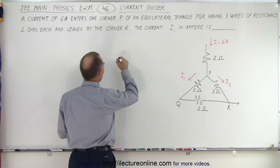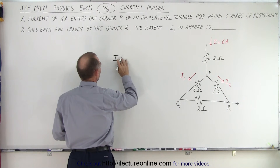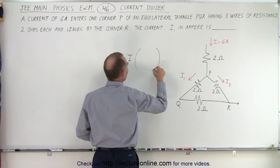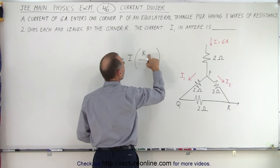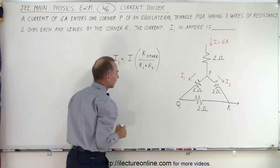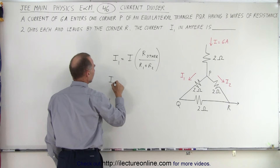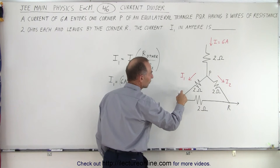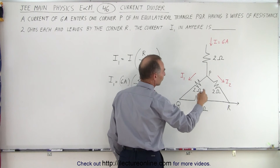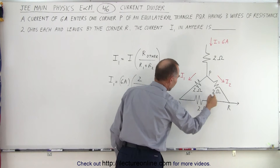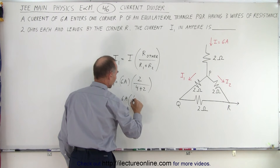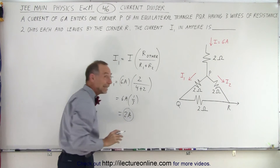It's a simple equation. We can say that I1 is equal to the current entering — let's call that I — times the ratio of the resistance in the other branch, divided by the resistance of both branches together. In this case, I1 is therefore equal to 6 amps times the resistance of the other branch, which is 2 ohms, divided by the resistance of both branches: 4 plus 2, which is 6. So that's 6 times one-third, and I1 equals 2 amps.